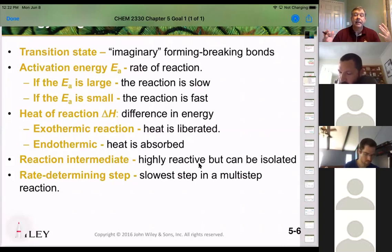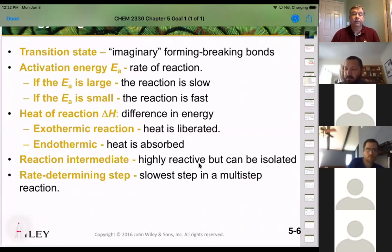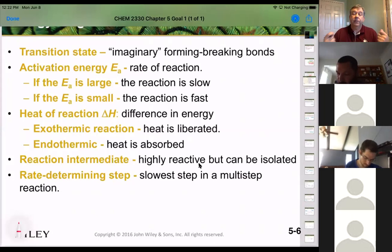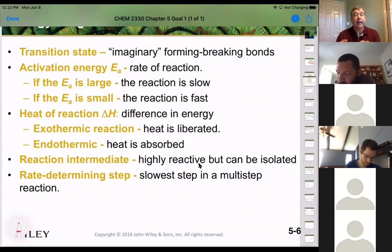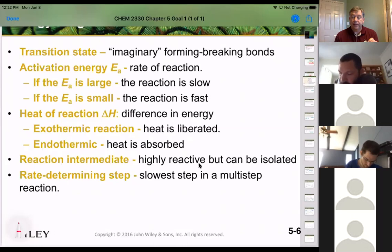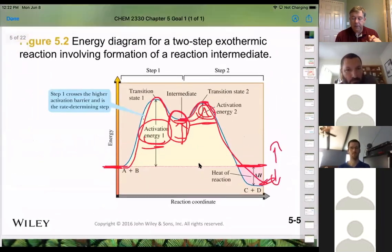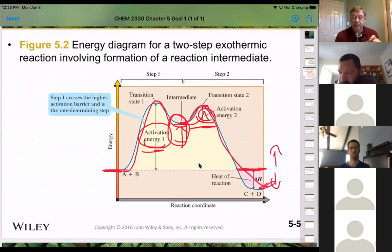Heat of reaction: if heat is liberated, it's an exothermic reaction; if heat is absorbed, it's endothermic. A reaction intermediate is highly reactive but occasionally can be isolated or at least seen. The rate-determining step is the slowest step — in the case of our double-hump diagram, that reactive intermediate is the rate-determining step, because the biggest activation energy determines the speed of the reaction.